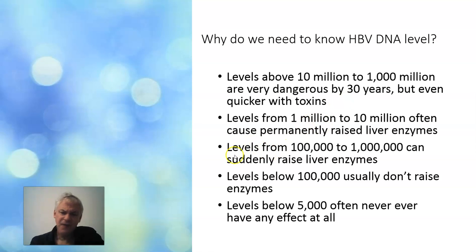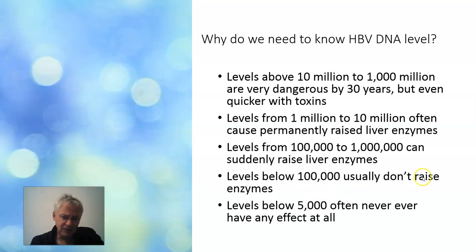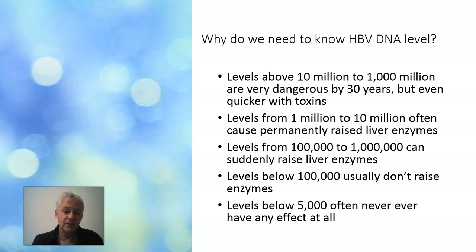At levels of one hundred thousand to about one million, sometimes there's no sign of raised ALT or AST and the liver seems quite happy, but we need to watch it closely because lifestyle toxins could cause the liver to start malfunctioning. Levels below one hundred thousand often don't affect the liver much. Levels below five thousand often never have any effect at all. We do a DNA test to see how much virus we're dealing with, as each level has a different type of effect.